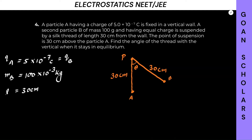Now, what are the forces acting on B? The question asks us to find the angle of the thread with the vertical when it stays in equilibrium. Equilibrium means net force is zero. First force: weight Mg acting downward, parallel to AP. Second force: tension T along the thread direction. Third force: electric force F along the line joining A and B.